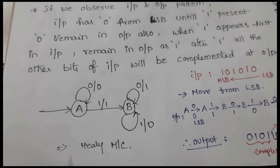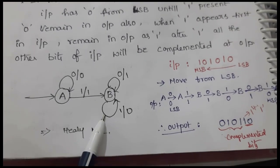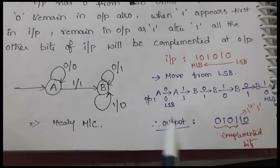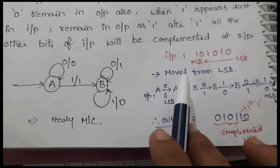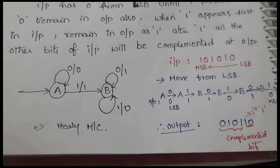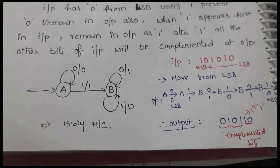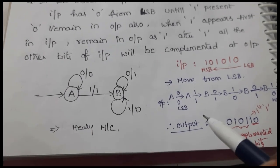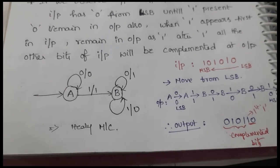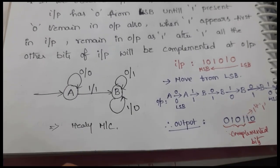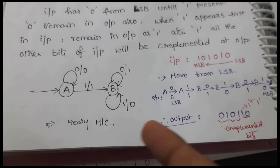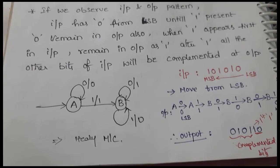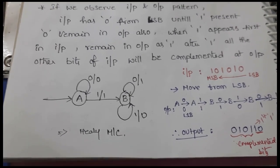This is our Mealy machine. We can check for any number of examples. I hope you understand — please go through some other examples to verify whether it correctly converts the 2's complement of any given binary number. Thank you all.